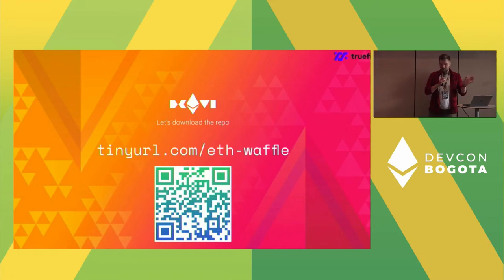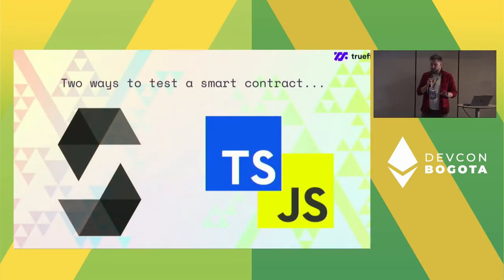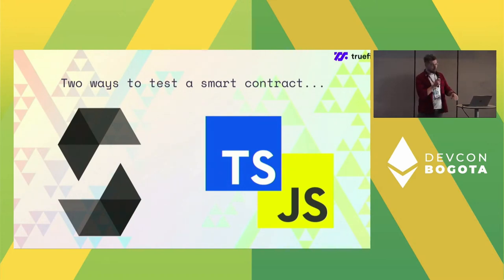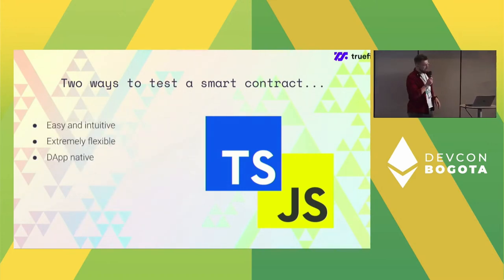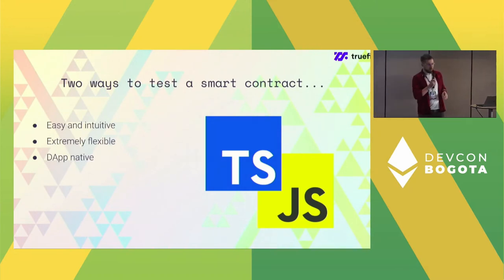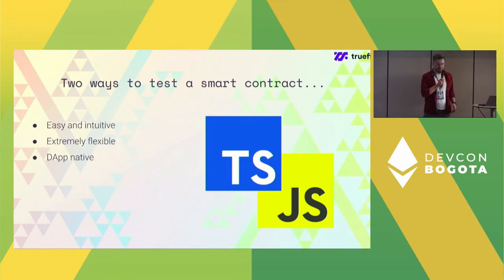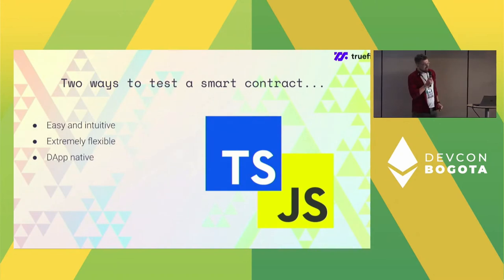There are two basic approaches to testing smart contracts. One is testing smart contracts with other smart contracts, which has very nice properties, but the other approach is to test smart contracts with JavaScript or TypeScript code, which is what we're going to focus on. It's very easy and intuitive, very fast — which is important if you want to test-drive your code or make sure tests are being added as code is being created. It's also very flexible, arguably more so than testing Solidity with other Solidity code.